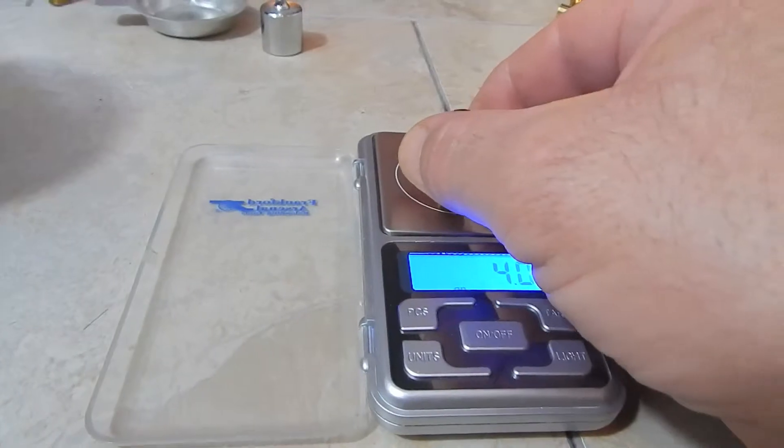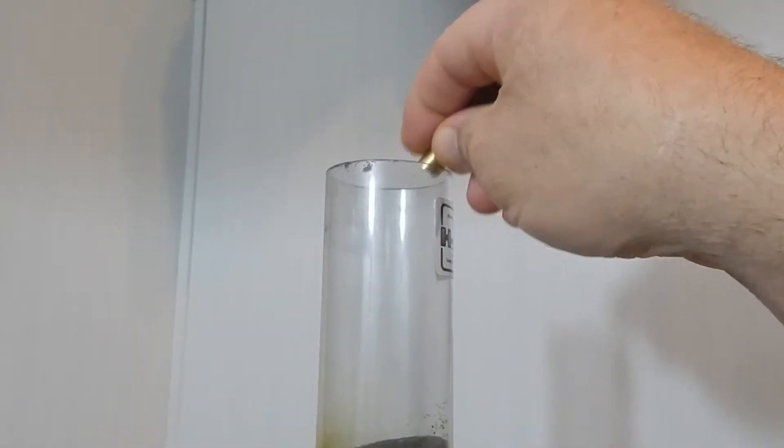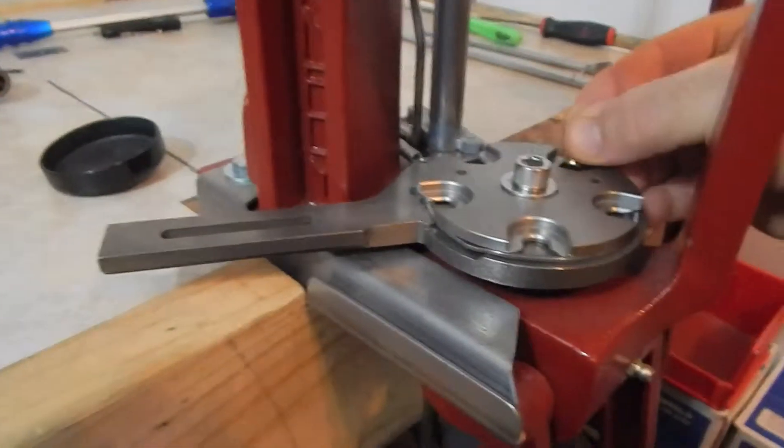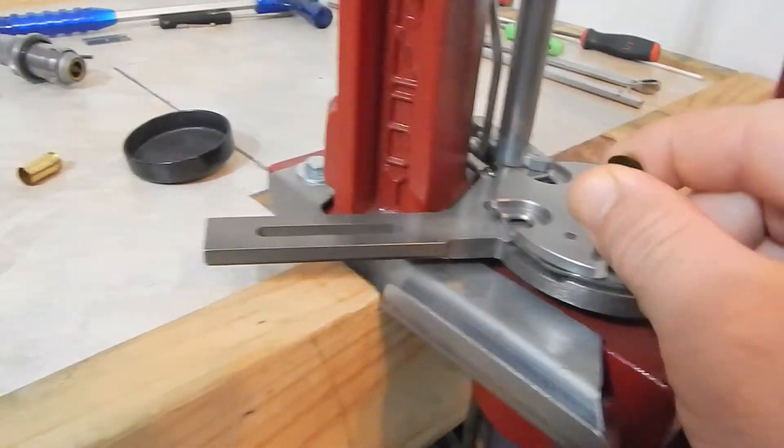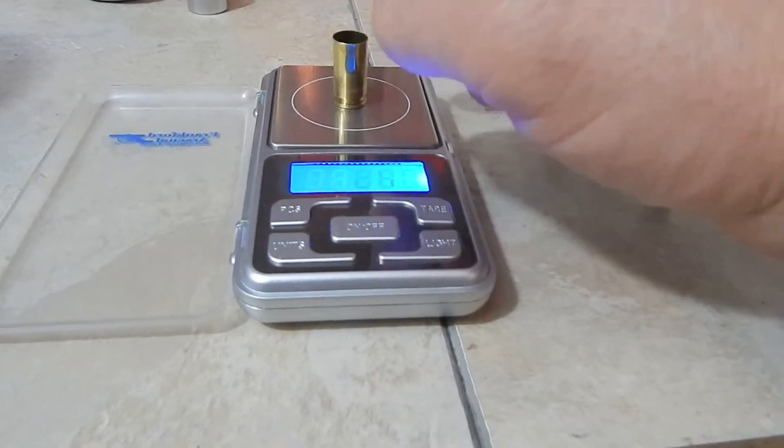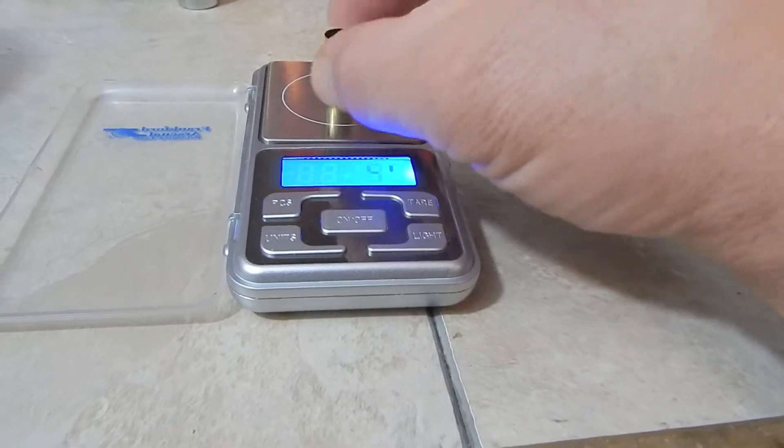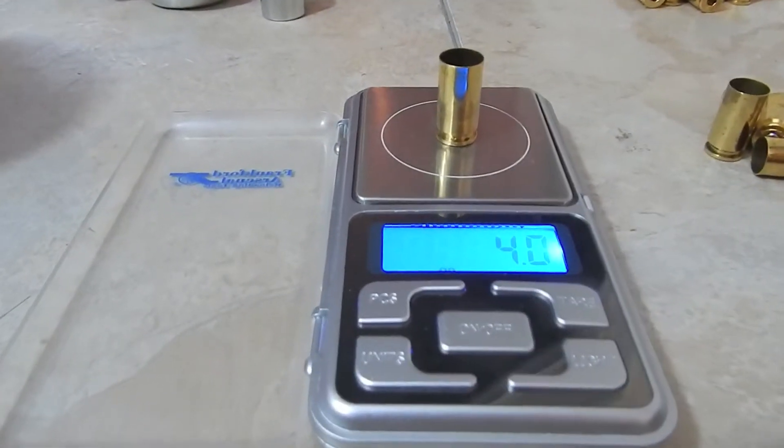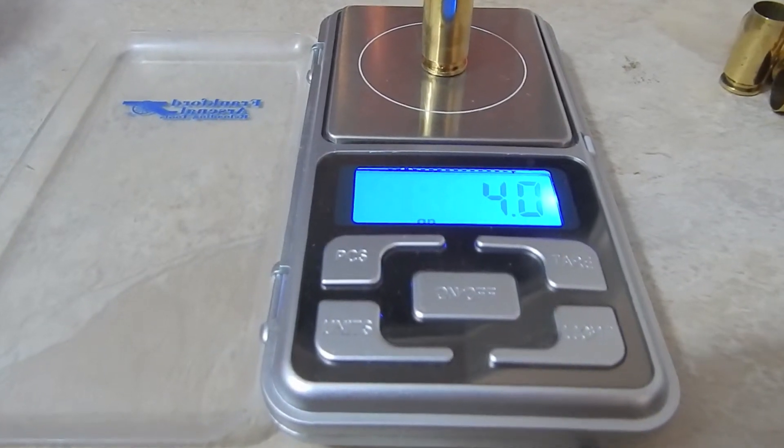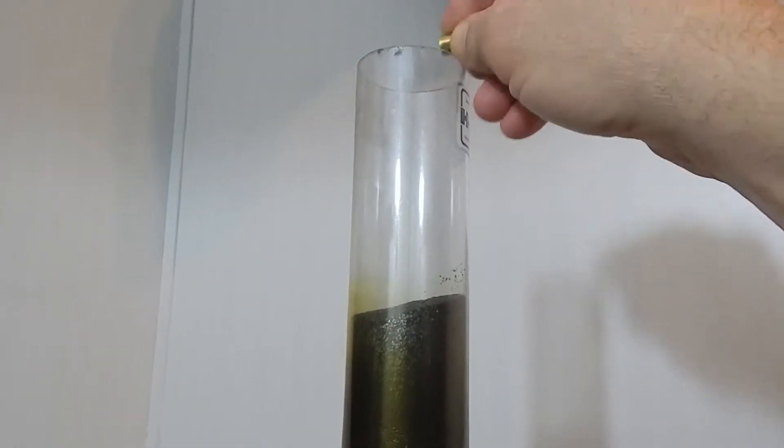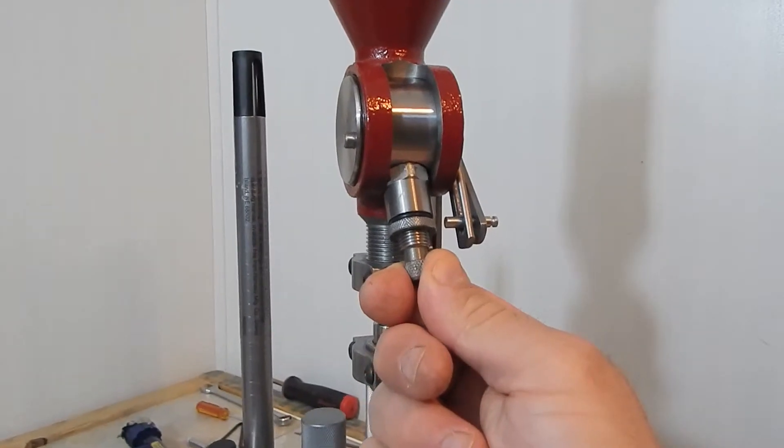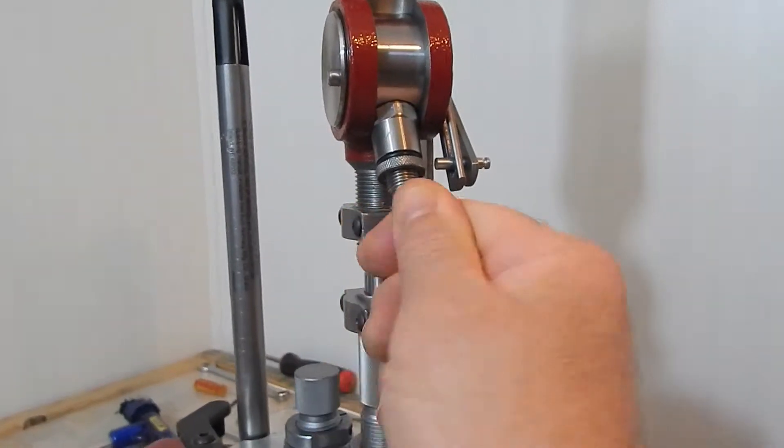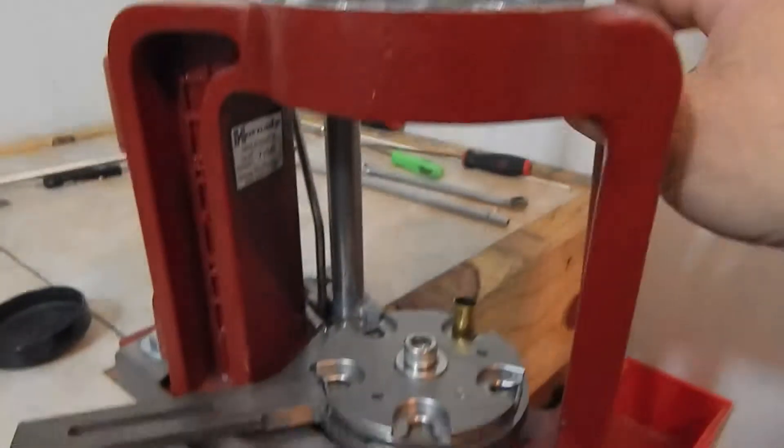We'll take one, two, three quarter turns out of there, so three quarters of a turn and let's try it again. Four point four. Dump that back up in the hopper, one more time. Four grains, still need to step it up a little bit. I think I'm going to go another three quarters of a turn. One, two, three, and that should put us really close.